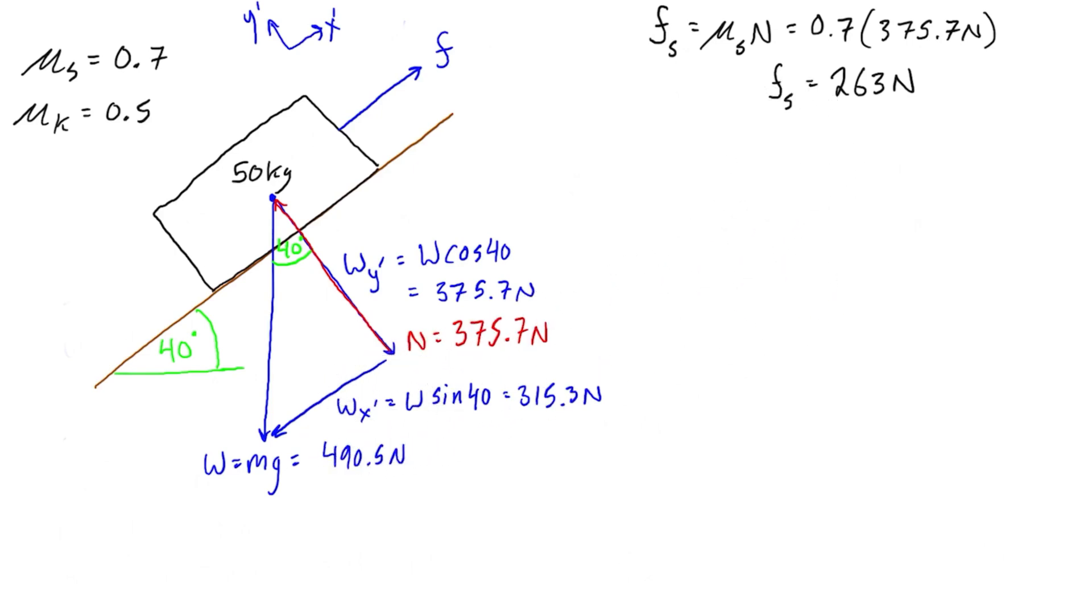So basically what I'm saying is we have Wx prime is bigger than the static friction, and we can see that 315.3 is definitely bigger than 263. So the block will slip because the static friction is not big enough to withstand its weight from sliding it down.